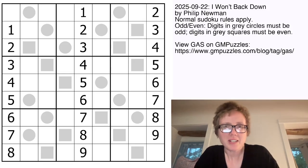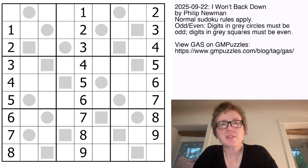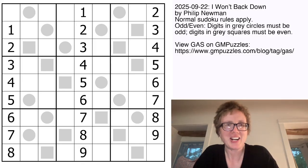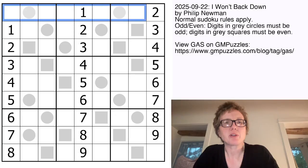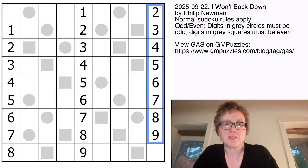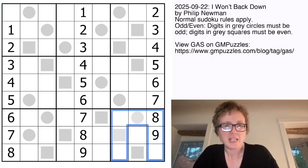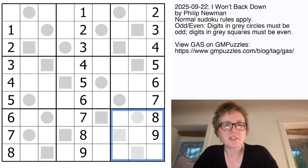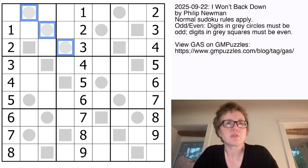Good morning, my friends. I'm Clover, and this is Genuinely Approachable Sudoku, and today we are solving I Won't Back Down by Philip Newman. This is an odd-even sudoku.